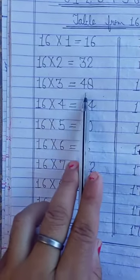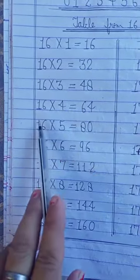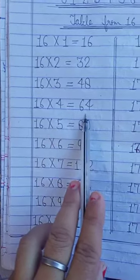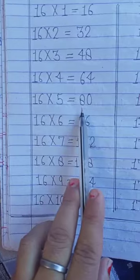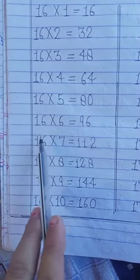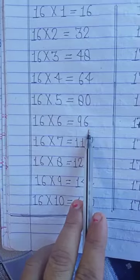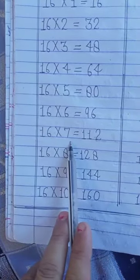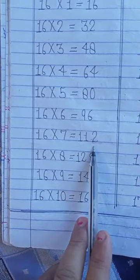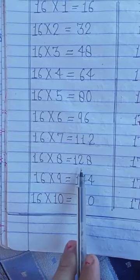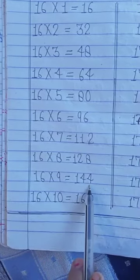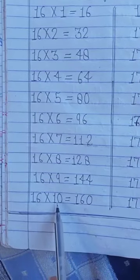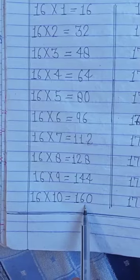16 fours are 64. 16 fives are 80. 16 sixes are 96. 16 sevens are 112. 16 eights are 128. 16 nines are 144. 16 tens are 160.